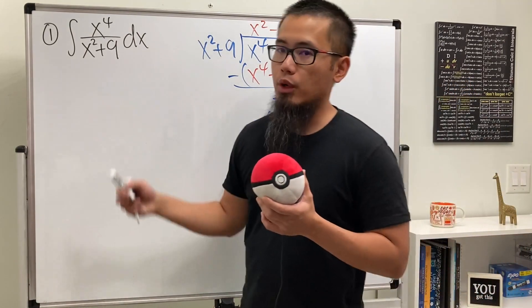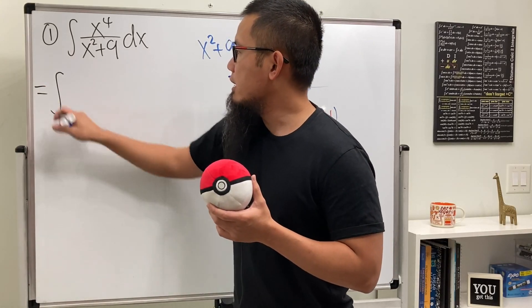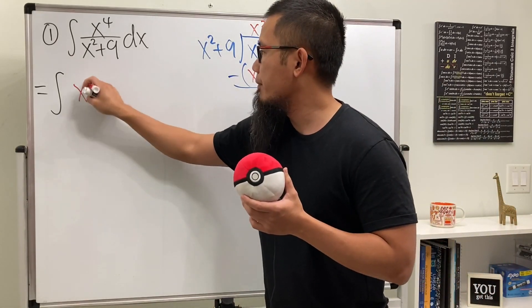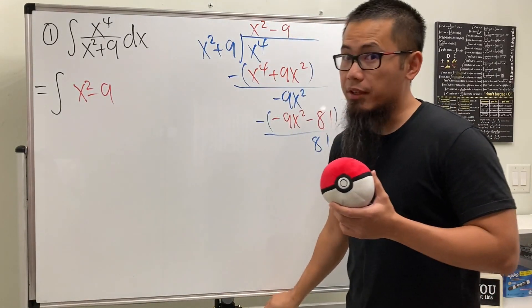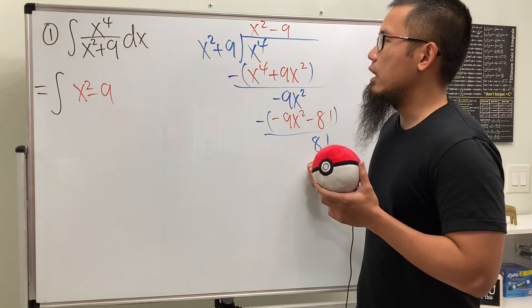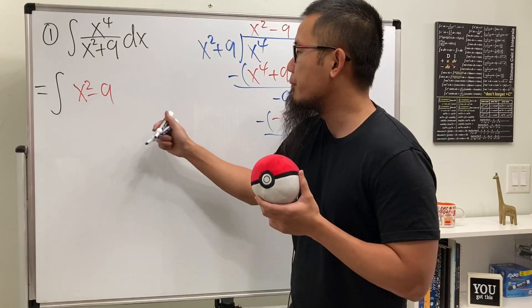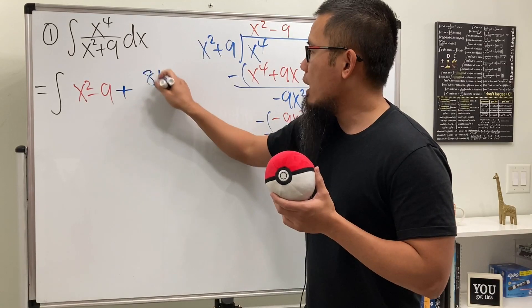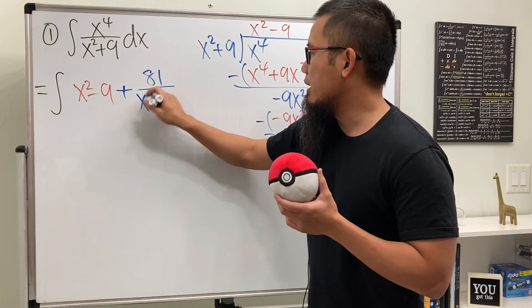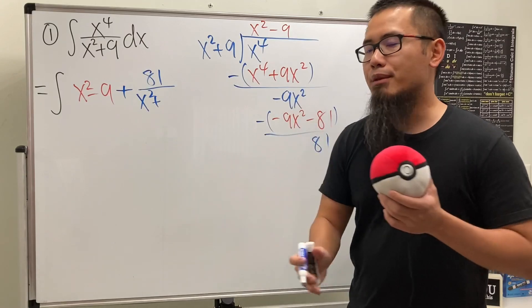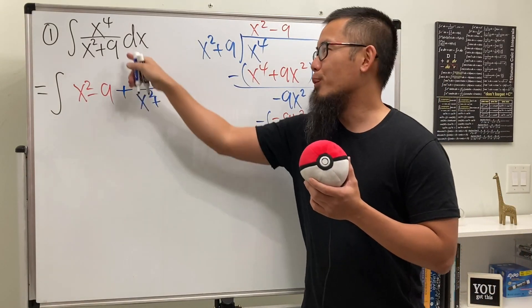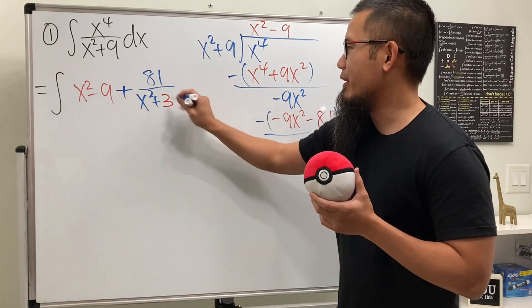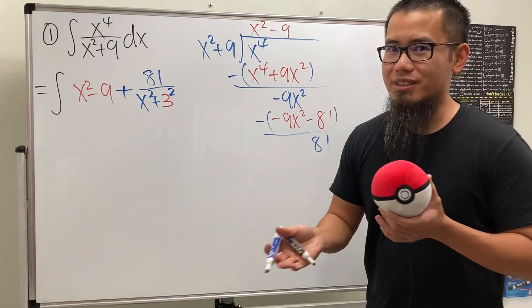With that, we can break down the original fraction. We will have just the integral of the quotient, which is x squared minus nine, and then after that we have the remainder 81 over the original denominator. We add 81 over x squared plus 9. When we have an irreducible quadratic like this, we'll be looking at the 9 as 3 squared, because we'll be using the inverse tangent formula.